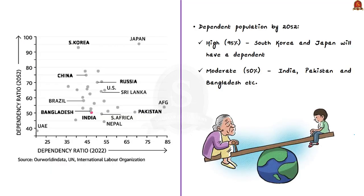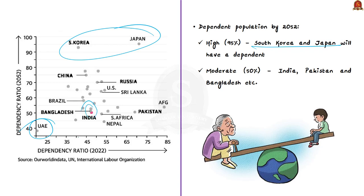The third graph covers the dependency ratio at country level. Countries like South Korea and Japan will have a dependent population of above 95% by 2052, leaving only 5% as working age population. UAE is projected to have dependent population below 40%. India is in the middle, projected at around 50% non-working population by 2052 — similar to Pakistan and Bangladesh.